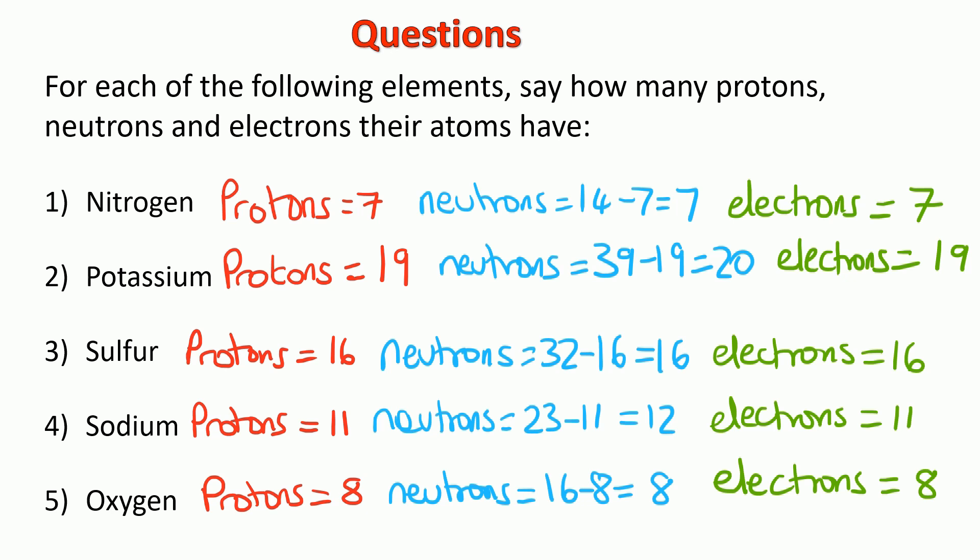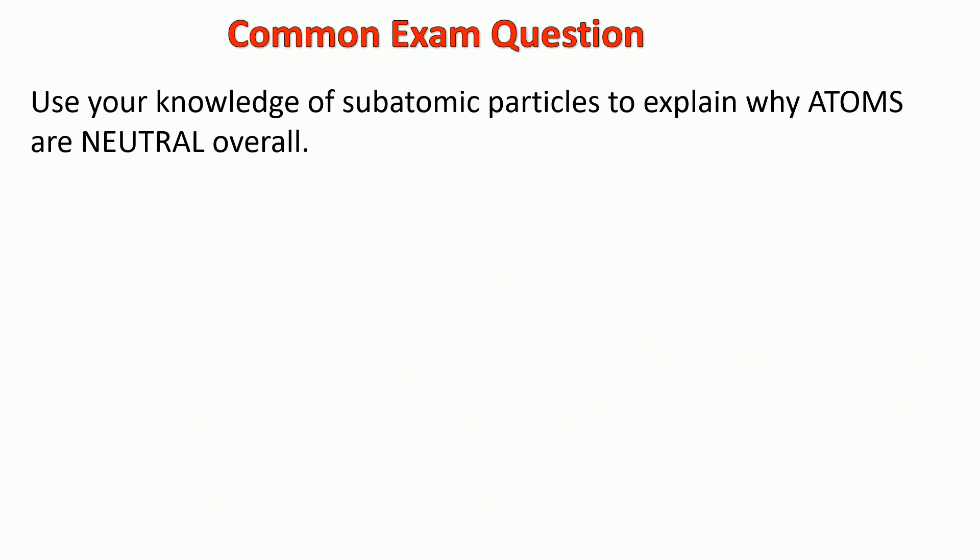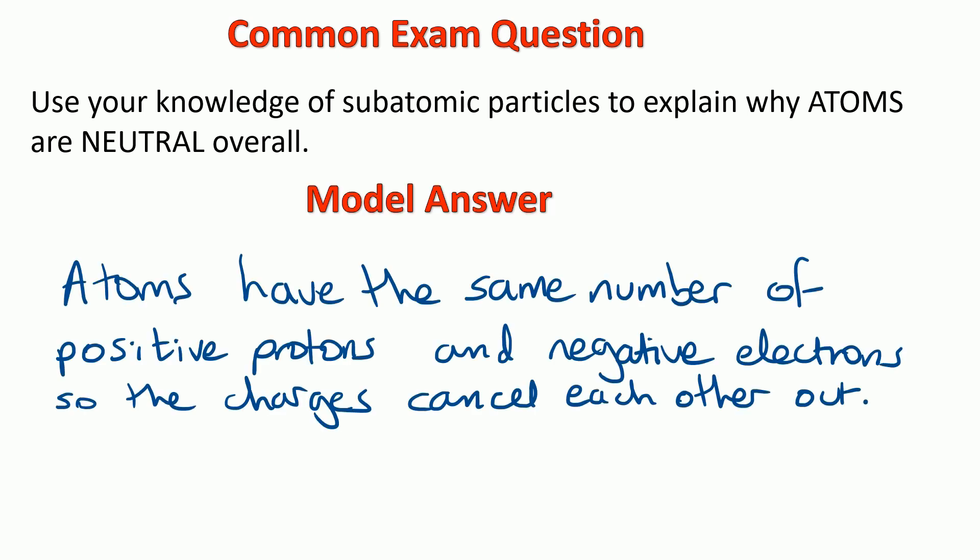Here's a common exam question I've seen time and time again as a teacher on the GCSE exam paper, and also one that I've marked many times as a GCSE examiner. Use your knowledge of subatomic particles to explain why atoms are neutral overall. So I'll show you a model answer. We need to say that atoms have the same number of positive protons and negative electrons, so the charges cancel each other out. And in a question like this, you would get one mark for saying positive protons, one mark for saying negative electrons, and they've got the same number. And you'd also get a mark for saying those charges will cancel each other out.